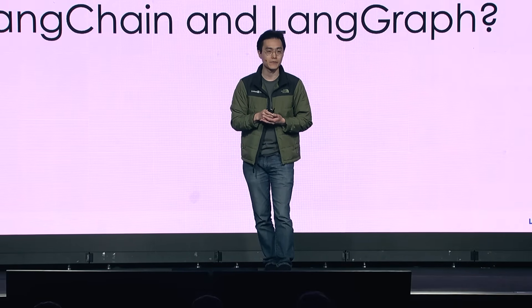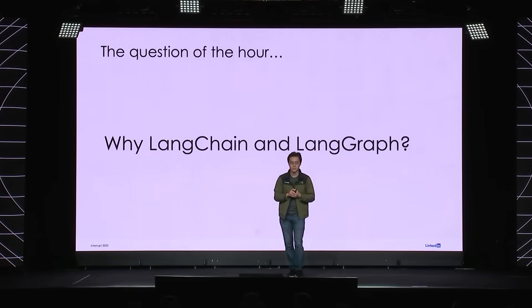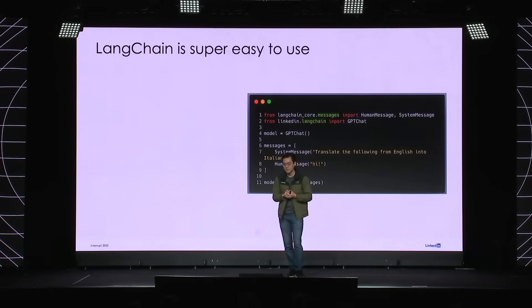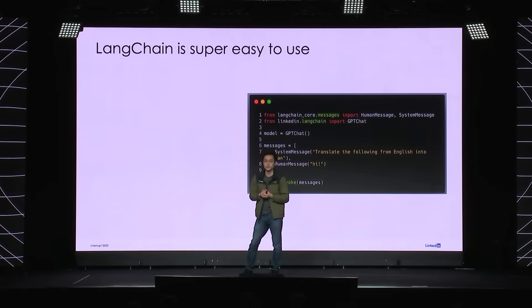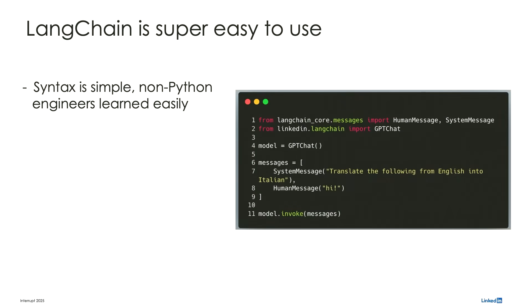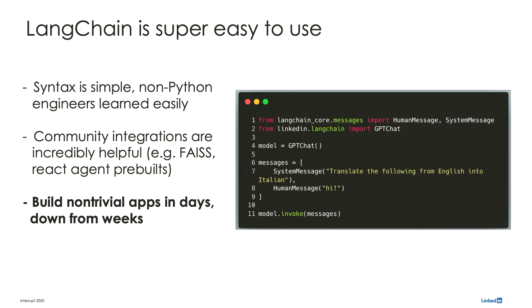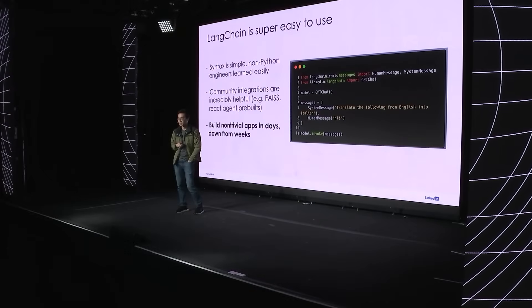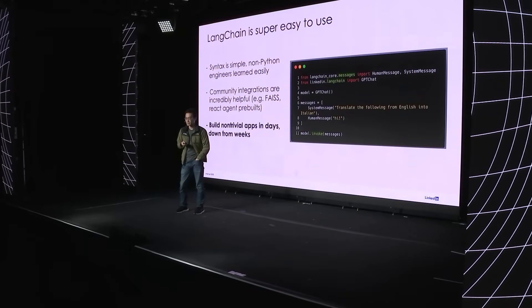This leads to the question of the hour: why did we end up choosing LangChain and LangGraph over the sea of other alternatives? The first thing is that it's just really easy to use — even Java engineers were able to pick it up really easily. If you look at the syntax, you can pretty easily identify what's happening in this basic construct. Furthermore, through various community integrations — like the community FICE implementation or the React agent pre-built from the LangGraph official repo — we were able to build non-trivial apps in days, down from weeks, saving teams months of time across the board.